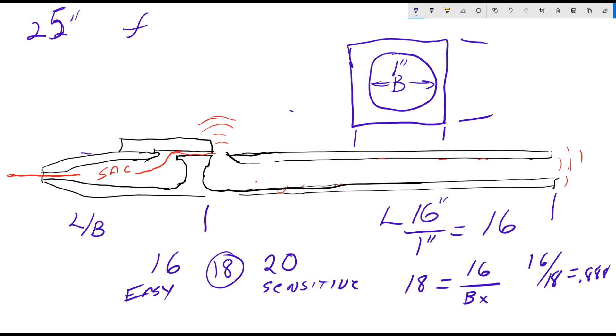So for an F sharp 4 we would have a total length equal to say 25 and a bore diameter of 7 eighths.